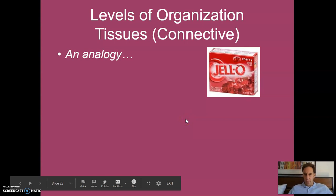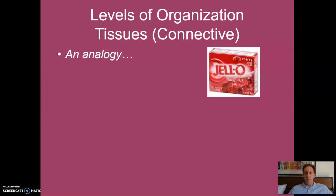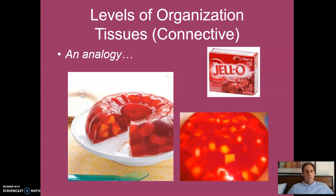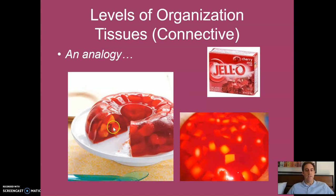I'd like you to picture Jell-O — and every now and then I have a student who doesn't know what Jell-O is, so if you're not familiar, maybe Google it. In particular, picture Jell-O with fruit chunks embedded in it. This is a good analogy for connective tissue: the cells are like fruit chunks, and the matrix is like the Jell-O surrounding them.